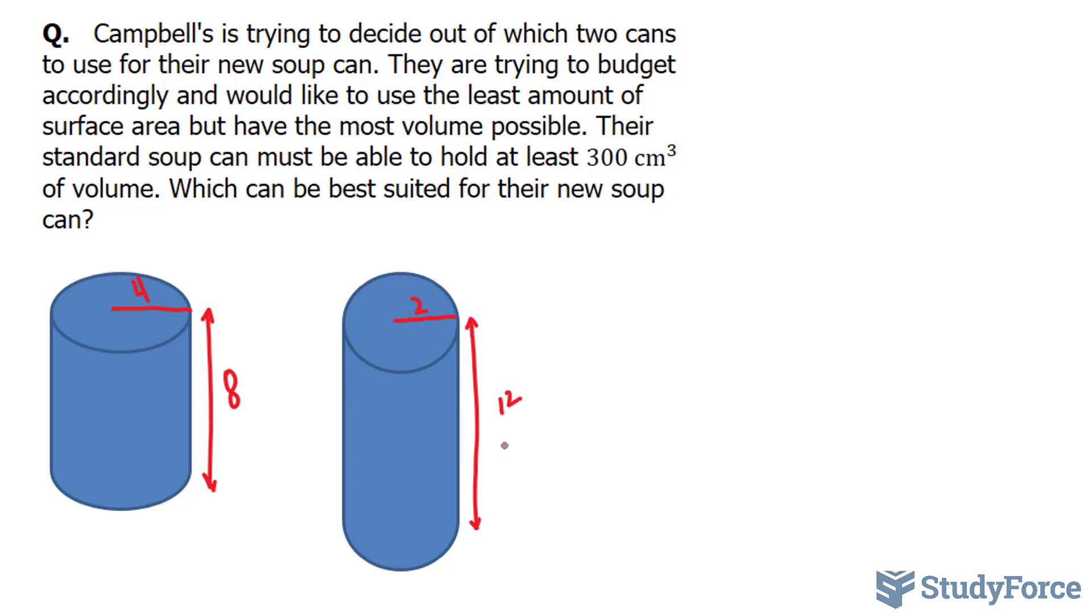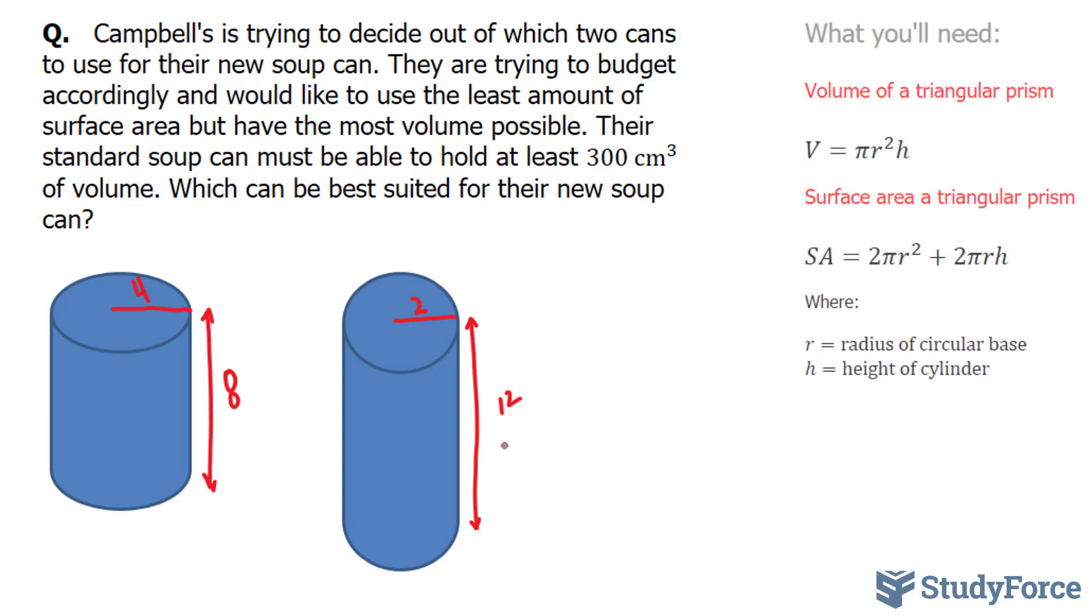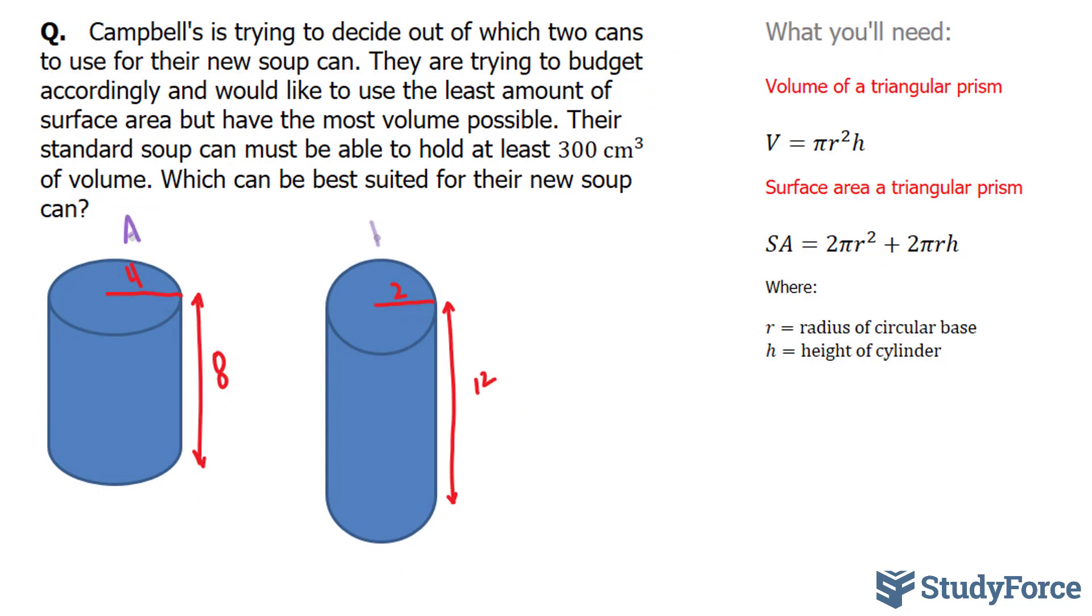We have to decide which of these two cans is best suited for Campbell's soup. To do this question, we'll need to find the volume of both of these cans, and also we'll need to find the surface area of both of these cans. And the formulas for these are provided to your right. We'll call this can A and this can B.